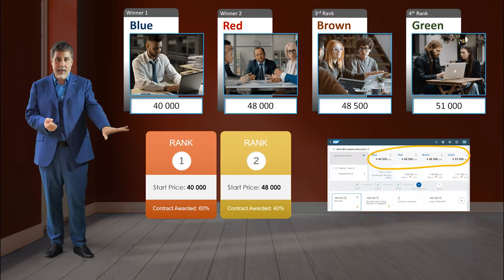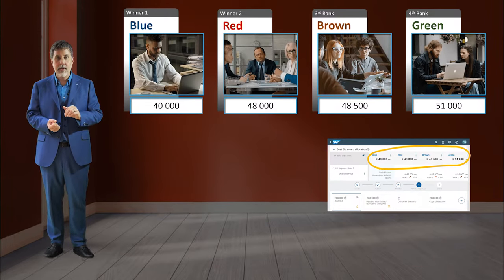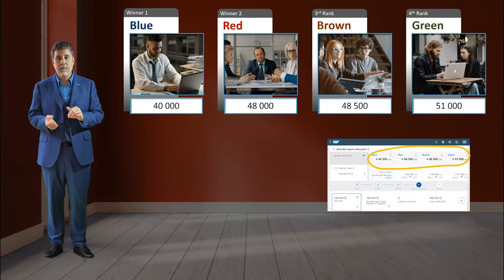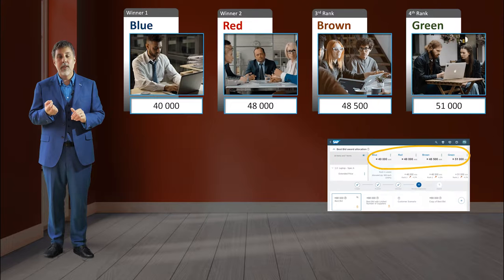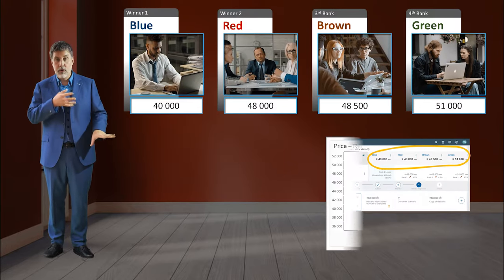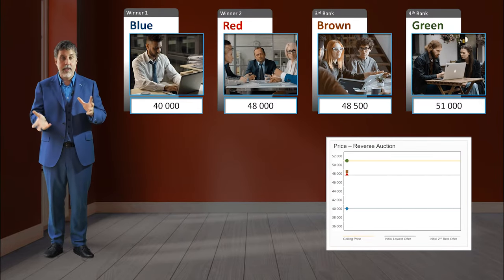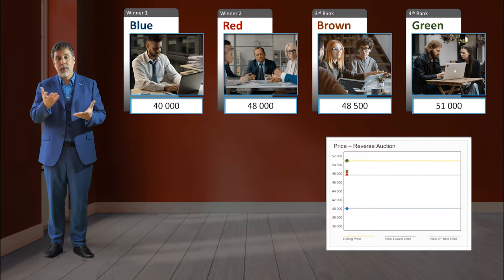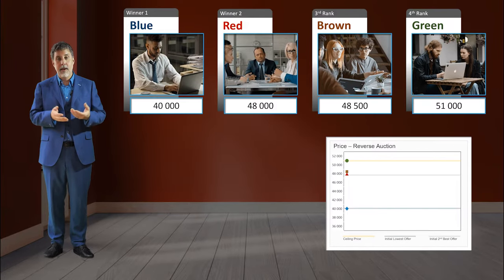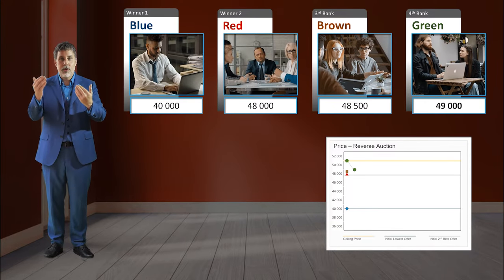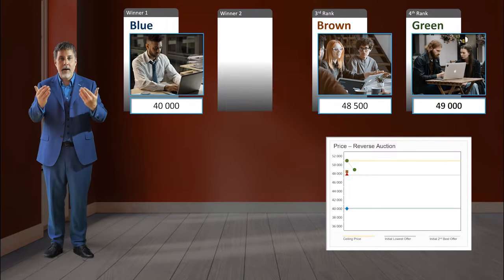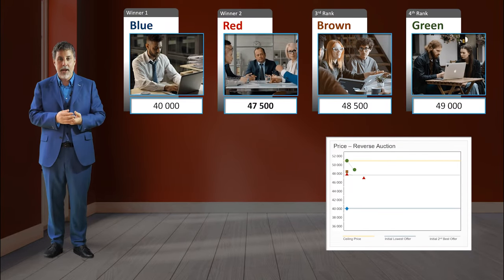We're going to hide this price — nobody's going to see it. But what they are going to see is their rank. They're going to see whether they're fourth or third, etc. This is the dynamic: suppliers are not going to place bids in an accelerated mode, but they watch where each other's rank is.